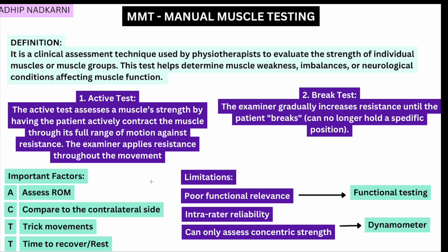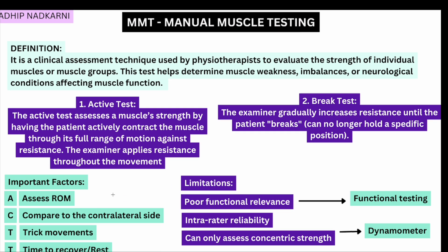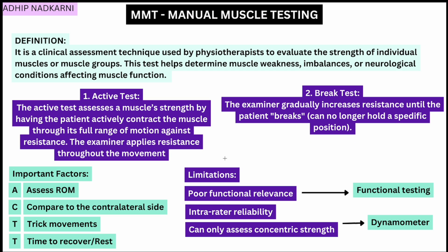Time to recover is also quite important — if you don't give sufficient rest to the patient, you might grade them lower than their actual strength. Moving on to limitations: poor functional relevance is one of the biggest limitations of MMT, because the procedure looks at strength of a muscle or muscle group rather than function. This gap can be filled by doing functional testing such as the 30-second sit-to-stand test.